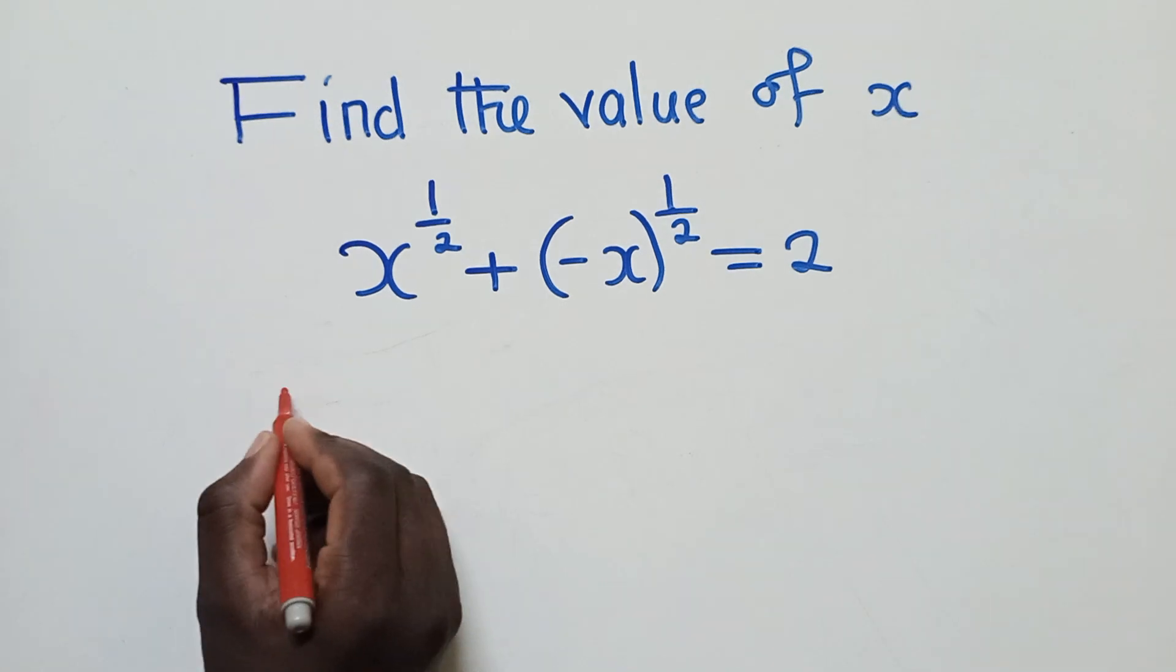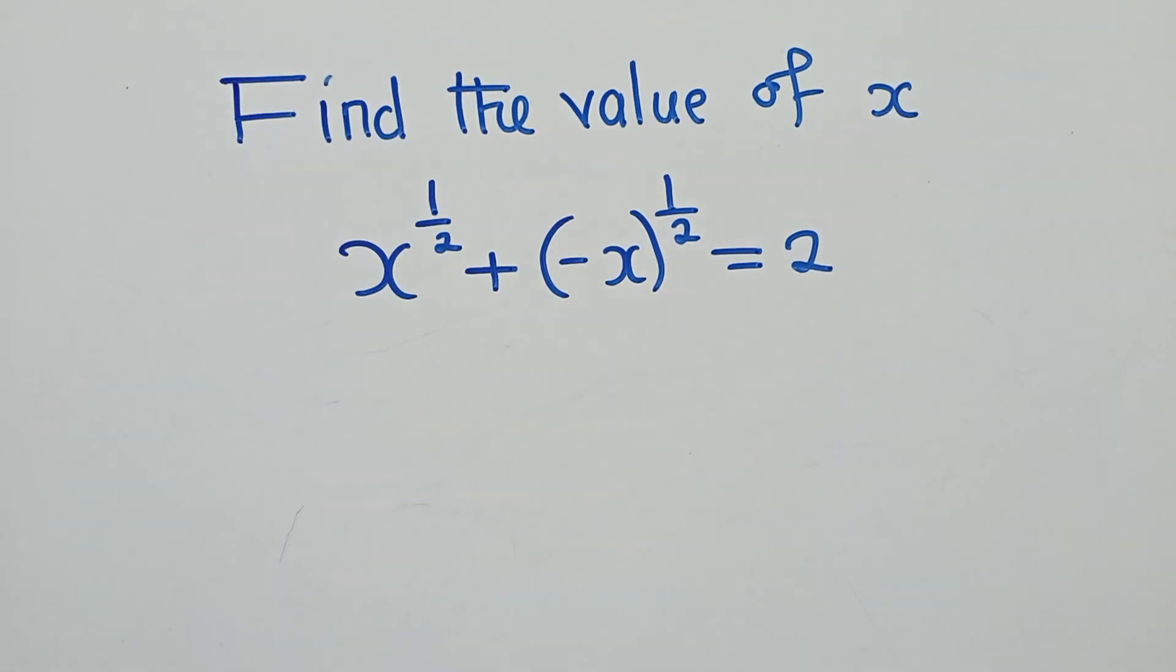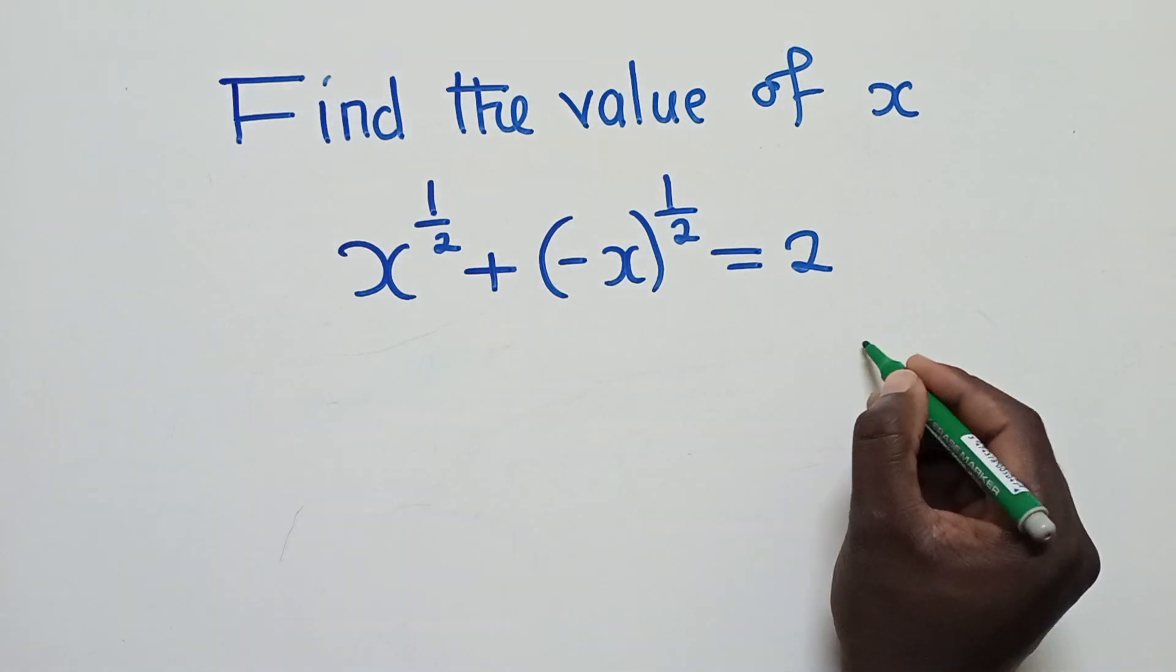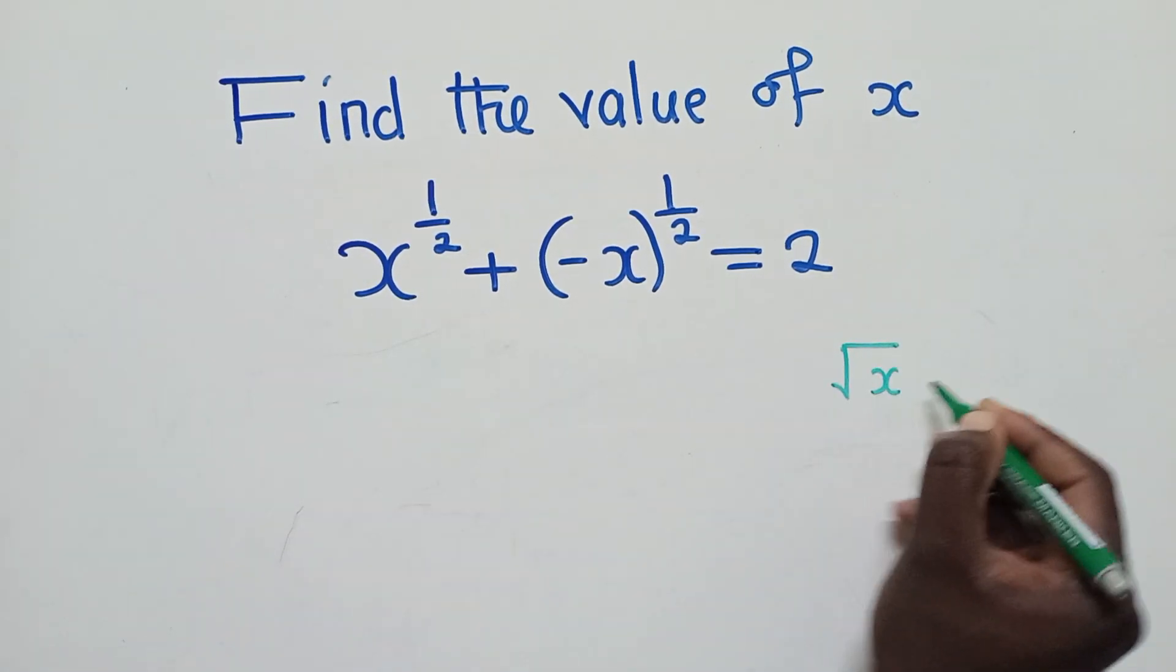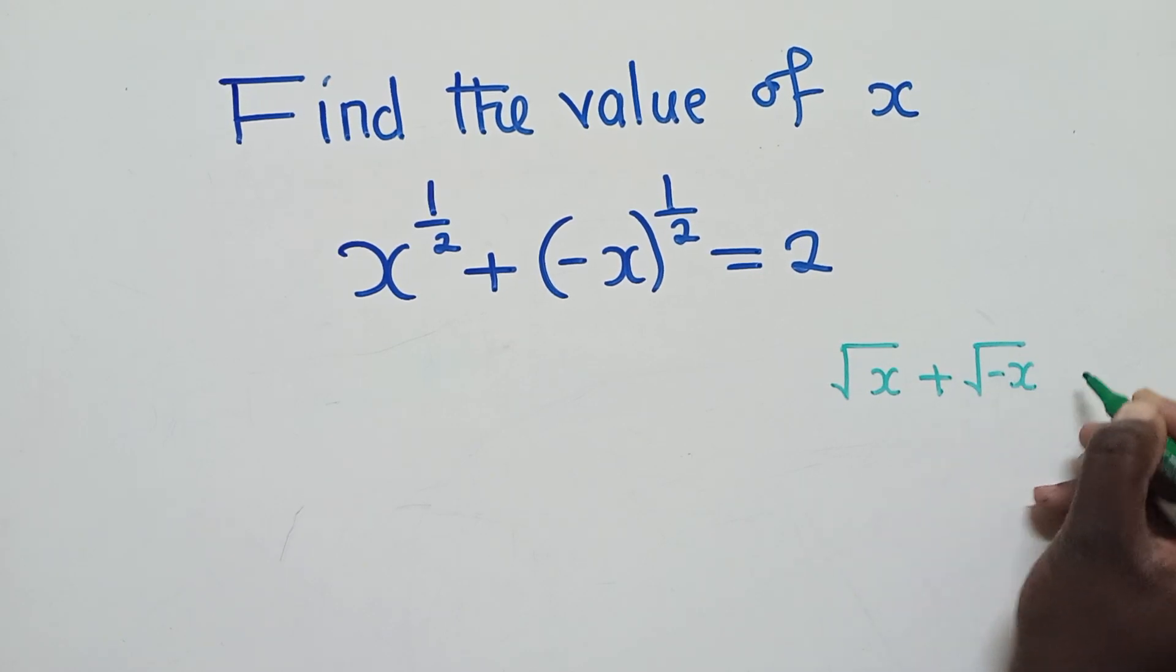What we normally do here is to try and understand what they're asking us, what have they given us. So what we have here is the same as square root over x plus square root over negative x is equal to 2.